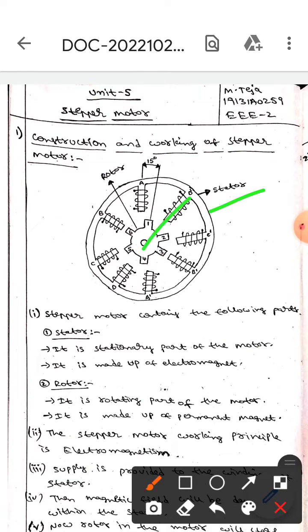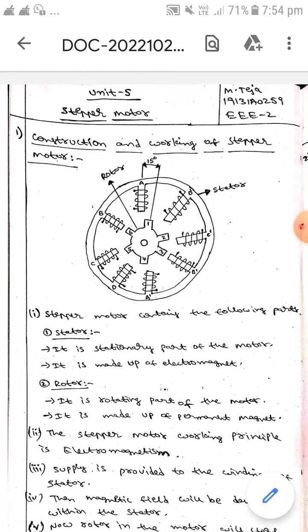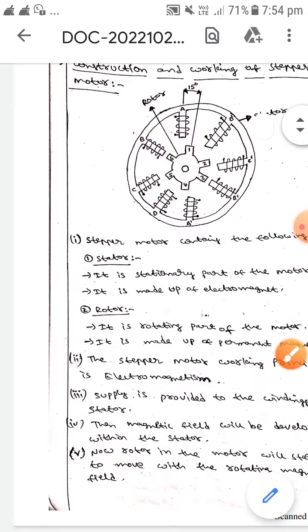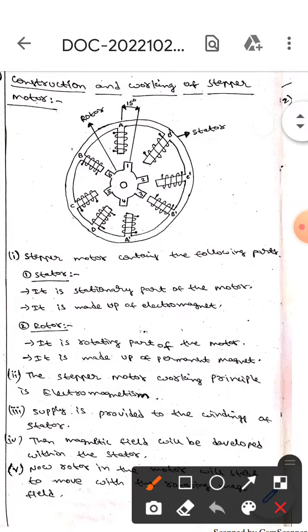Here this is the stator, whereas this is the rotor. These are all stator poles and these are all rotor poles. If you observe, the stepper motor contains the following parts: one is stator and the second one is rotor.